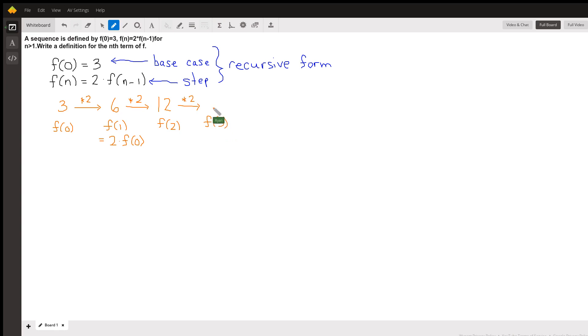And we just keep doing this. So what this problem wants is an explicit form, or an explicit definition for the nth term of f. So eventually we're going to get to f(n), whatever n is, and along the way we're multiplying by 2 each time.